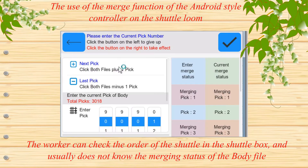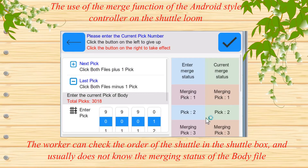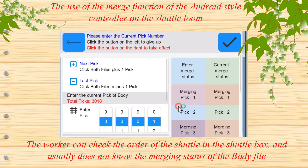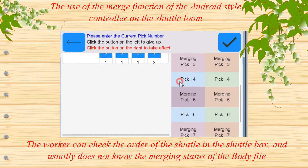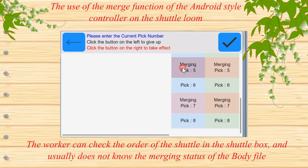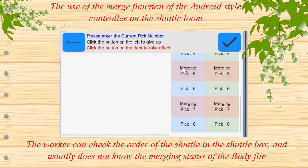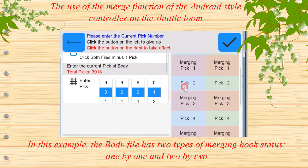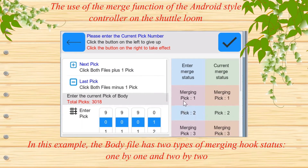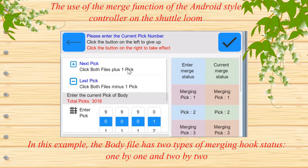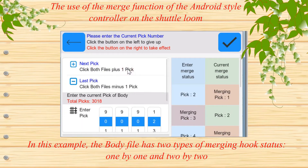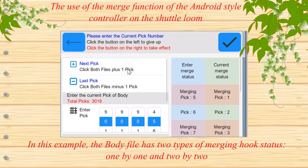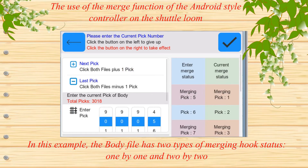The worker can check the order of the shuttle in the shuttle box, but usually does not know the merging status of the body file. In this example, the body file has two types of merging hook status: 1x1 and 2x2.